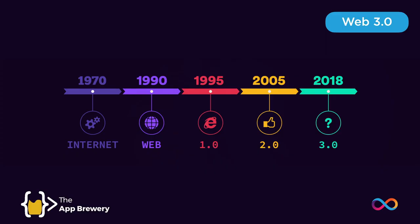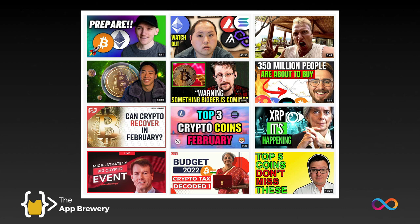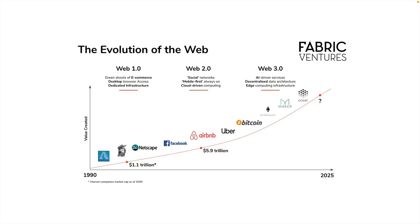So what is Web3.0? Ever since 2018, people have started building websites and applications on the blockchain, and this is the dawn of Web3.0. You've probably already heard of Bitcoin and Ethereum and other cryptocurrencies, but we're not here to talk about which cryptos to invest in. As developers, we can control the future — we don't have to predict it. Instead, we can build what Web3.0 will become.